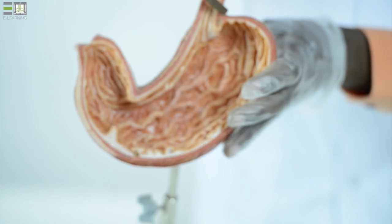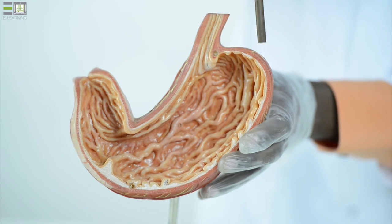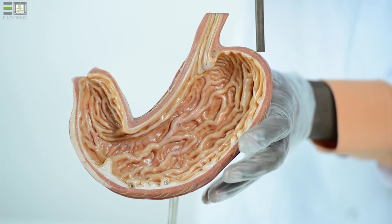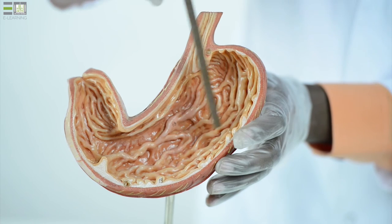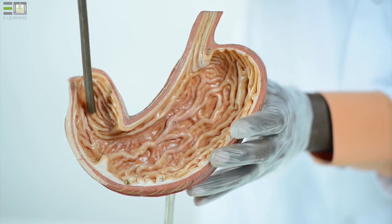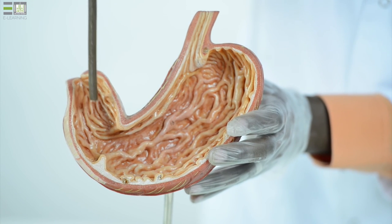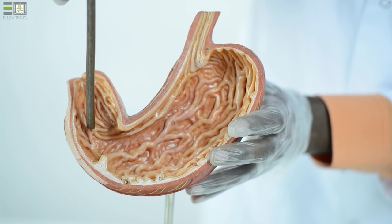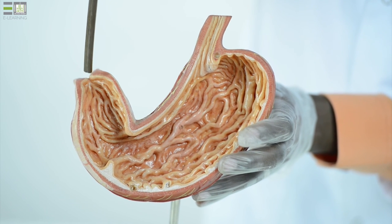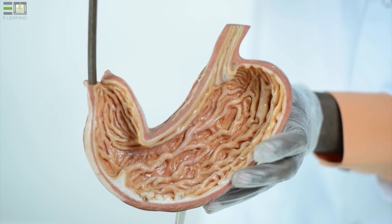The part of the stomach which lies above the level of the gastro-esophageal junction, this part is called fundus, and the middle part of the stomach here forms the body of the stomach, and the terminal part is called pylorus, which is subdivided into three parts: pyloric antrum, pyloric canal, and the pylorus, where we can find the pyloric sphincter.